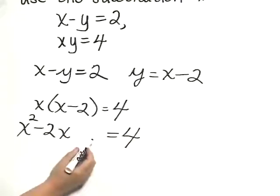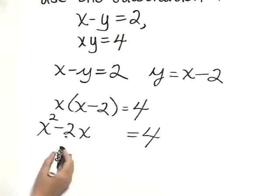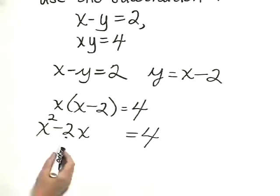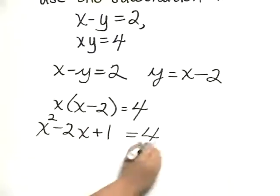I've left space here because I can complete the square pretty readily in order to solve. Taking half of negative 2, which is negative 1, and squaring it, which is 1, I add 1 to both sides of the equation.